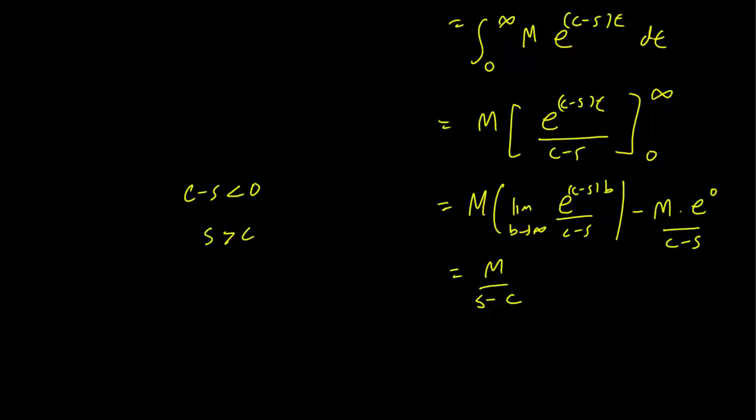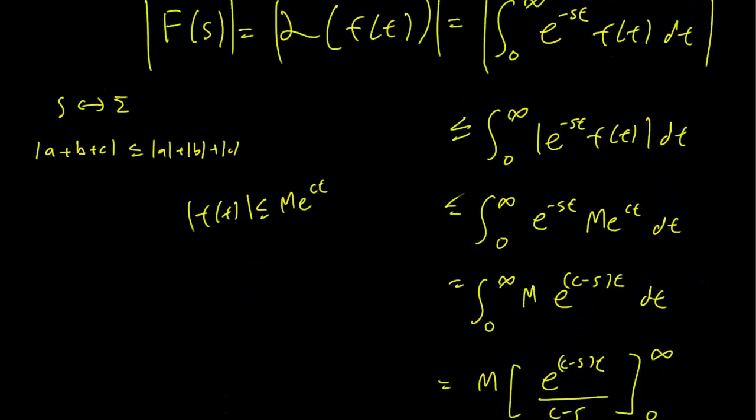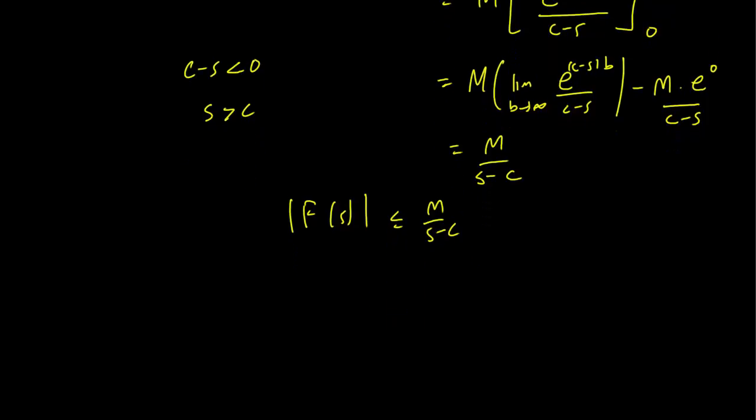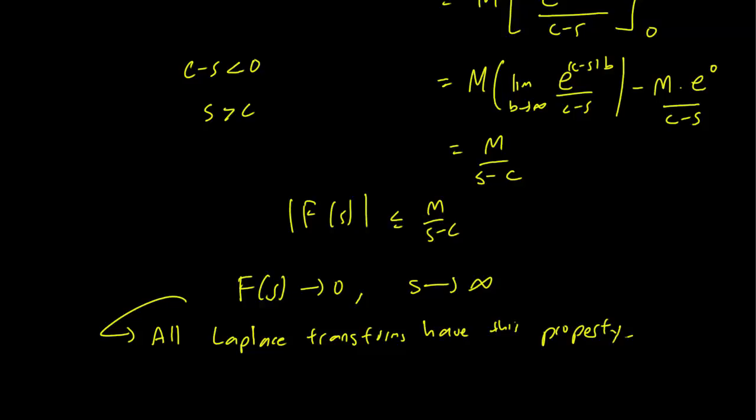One thing to notice is that we have written down that the absolute value of F(s) is less than M over (s - c). So indeed, our integral is finite, and the Laplace transform exists. And another thing to see is that this F(s) must go to 0 as s goes to infinity. And it turns out that all Laplace transforms must have this property. They all have to go to 0 as s goes to infinity.